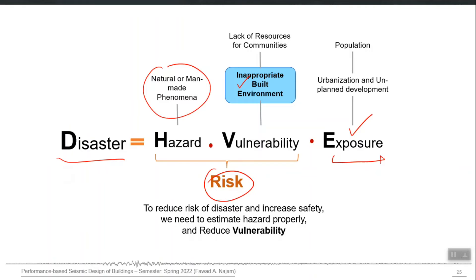For example, the southern and south-eastern part of Karachi has a low to moderate level of seismicity, but it is full of high-rise buildings and densely populated areas — very high exposure. So even a low to moderate level earthquake can cause a significant disaster. Please keep that equation in mind always; these words cannot be used interchangeably — they have very specific meanings.